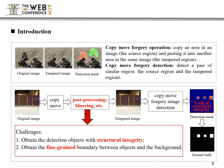Copy-Move Forgery operation refers to copying an area in an image and pasting it into another area in the same image. We call the former the source region and the latter the tampered region. The copy-move forgery image detection is to extract the source and tampered regions which have high similarity.